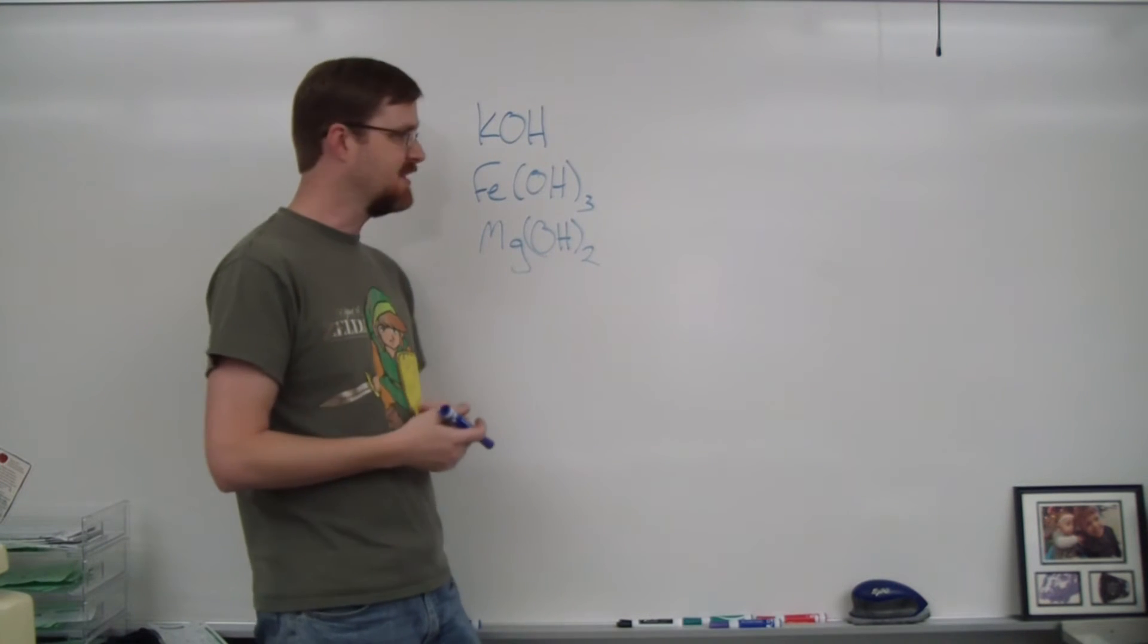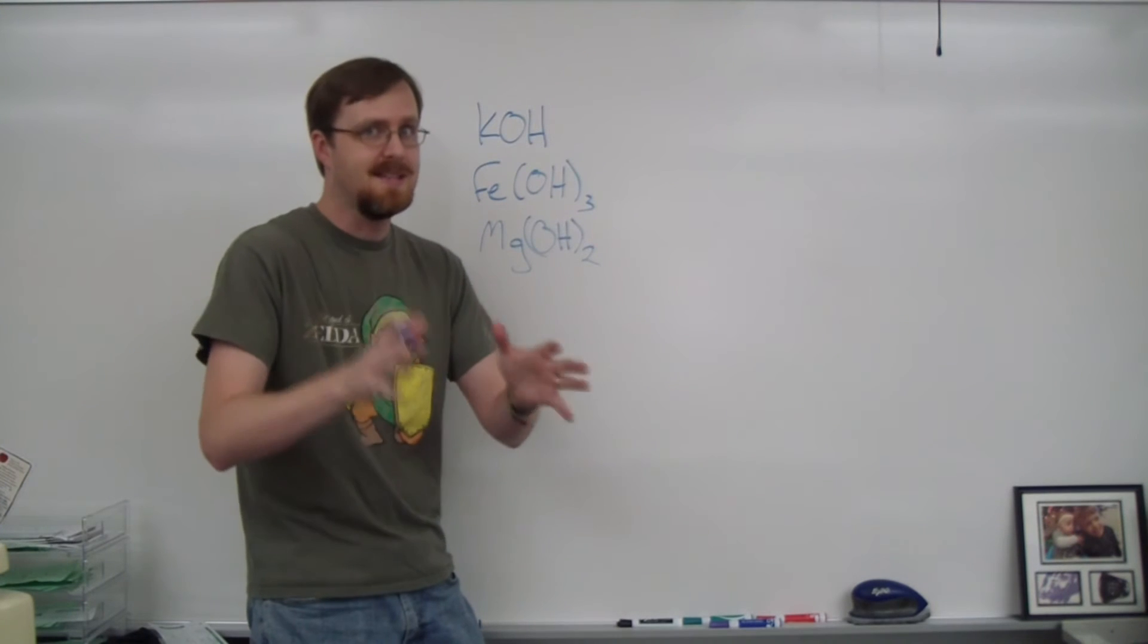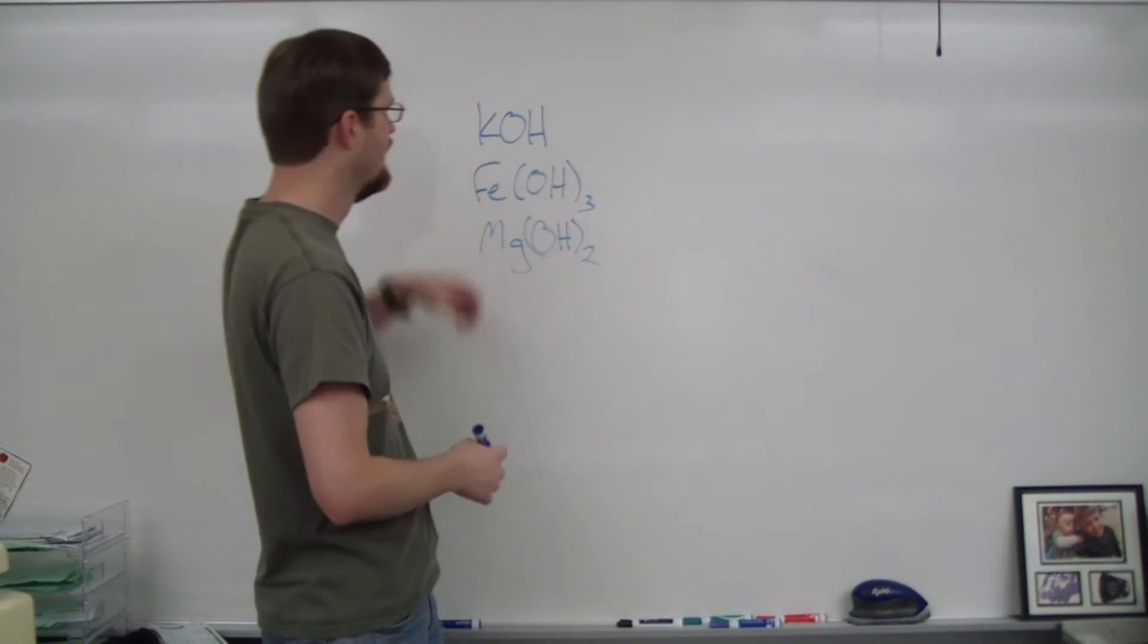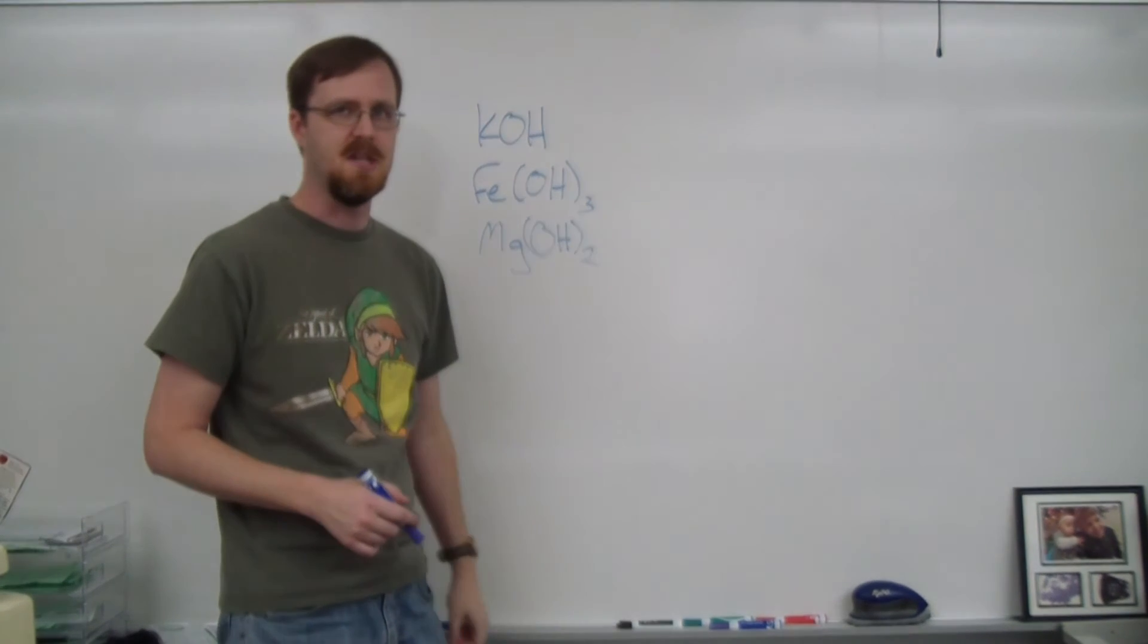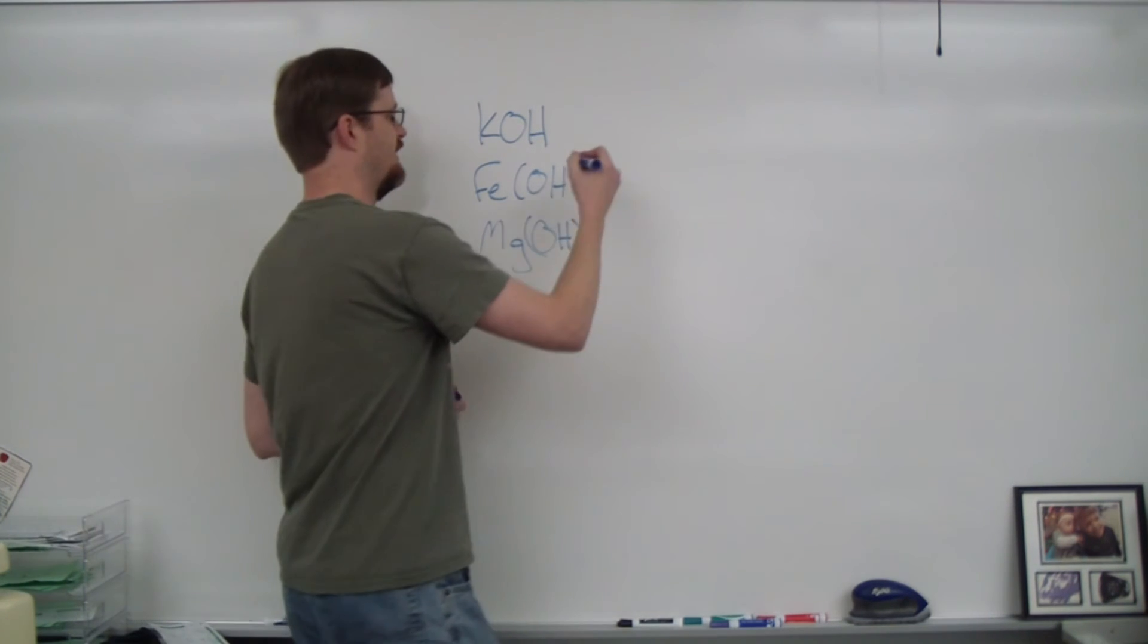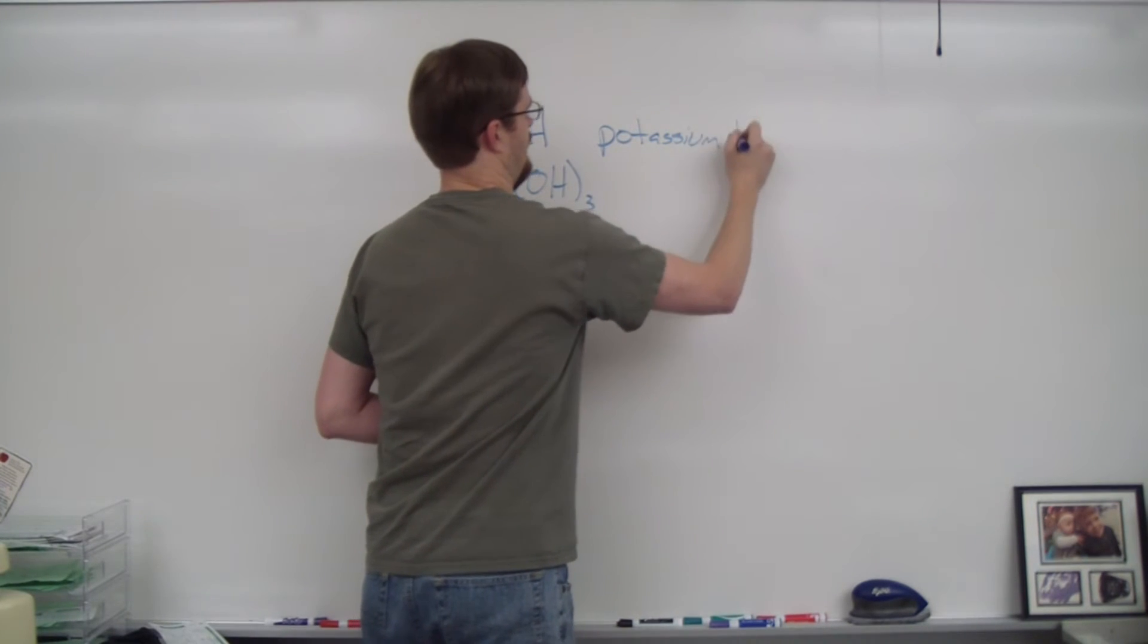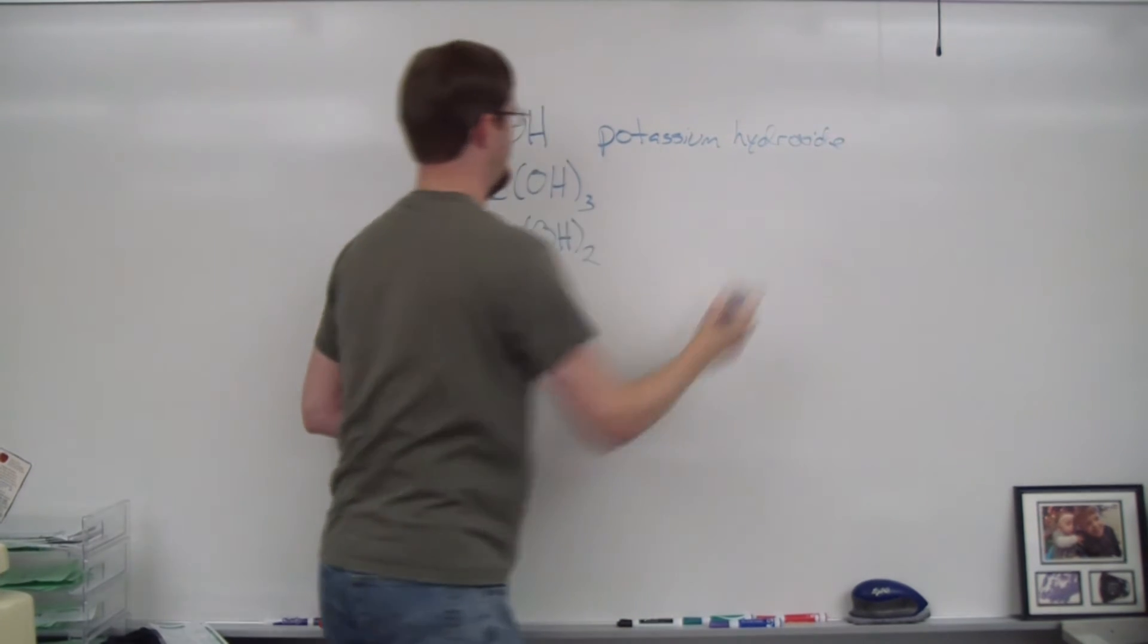All right. So here we go with the bases. And this should actually be a lot easier because these rules literally are the exact same rules as they are for ionic compounds. So let's go ahead and try it. So we got KOH. K is potassium. OH is hydroxide. Potassium is not one of the transition metals. So we just write the name and move on. So this is potassium hydroxide. Very simple.